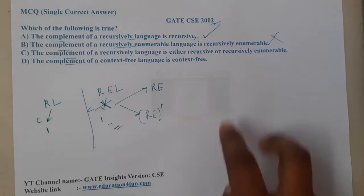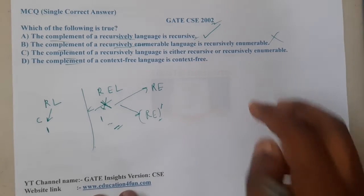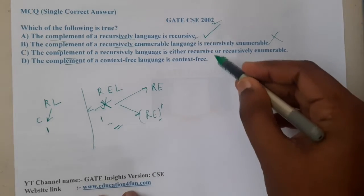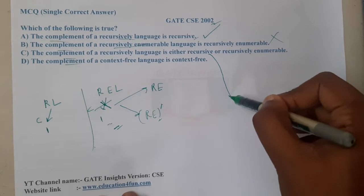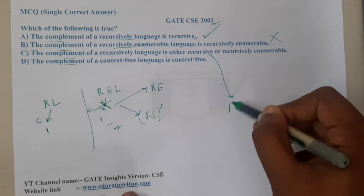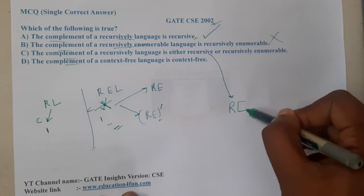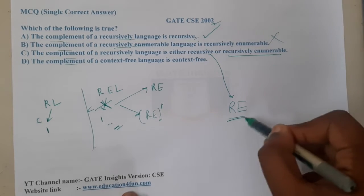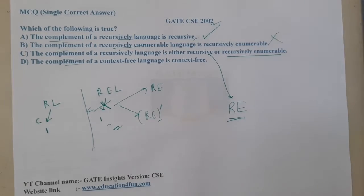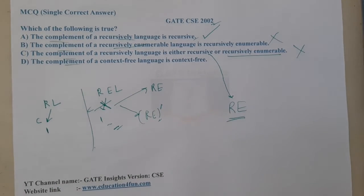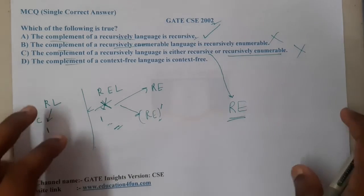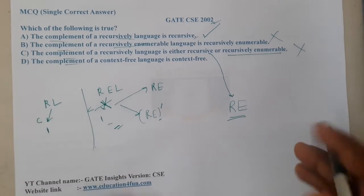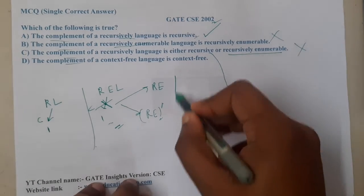Both options B and C are essentially saying the same thing — if it is recursive, it is obviously recursively enumerable as well. So indirectly, Option C is also claiming it is recursively enumerable, which we cannot guarantee. Hence Option C is also wrong.